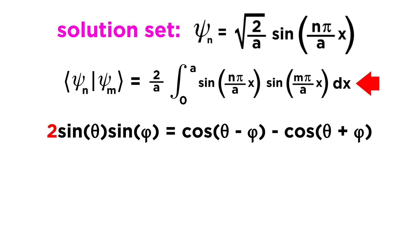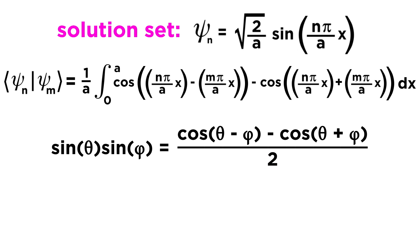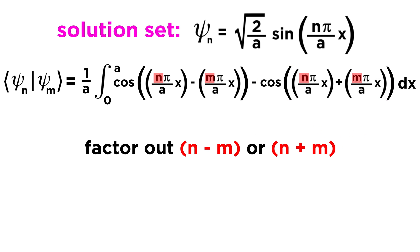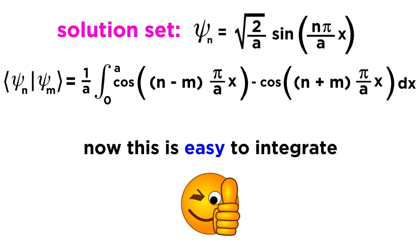This is useful because it splits up a product of trigonometric functions into a difference, which makes it easier to integrate. So if we consider theta to be n pi over a times x, and phi to be m pi over a times x, we can make this substitution. First, since we don't have a 2 multiplying the product of sine, we will actually get one half of this result, so we can compensate by pulling one half out of the integral, thereby reducing 2 over a to 1 over a. Then inside the integral we get the cosine of n pi over a times x minus m pi over a times x minus the cosine of n pi over a times x plus m pi over a times x. We can get these parentheticals to each become one term simply by factoring out the n's and m's.